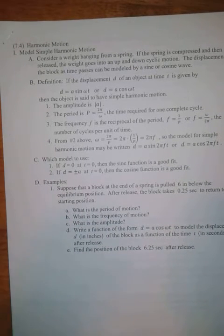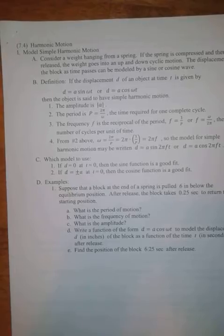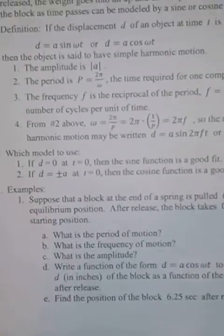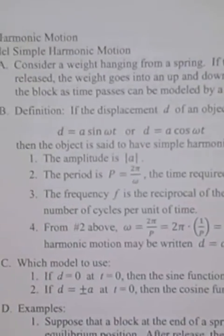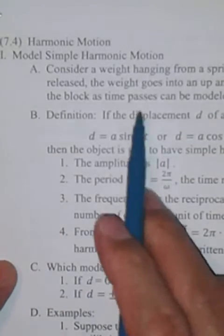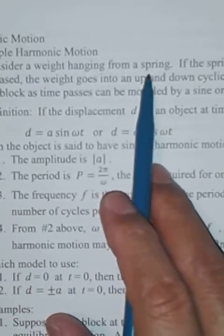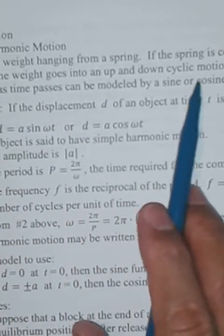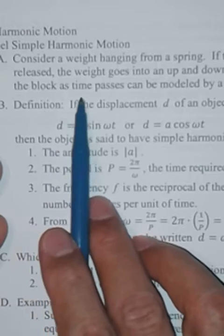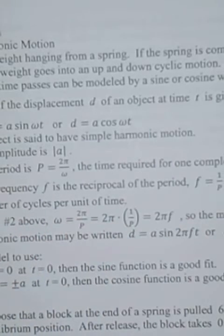Alright, so this is section 7.4 about harmonic motion. We're going to look at the first simple harmonic motion. So this is what harmonic motion is about. Consider a weight hanging from a spring. If the spring is compressed and then released, the weight goes into an up and down cyclic motion. The displacement of the block as time passes can be modeled by a sine or cosine wave.